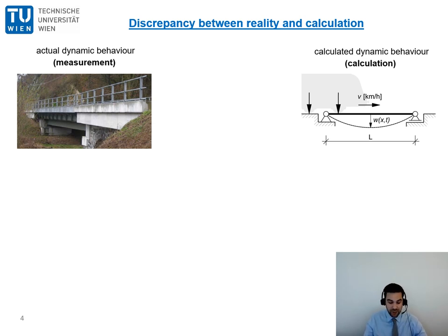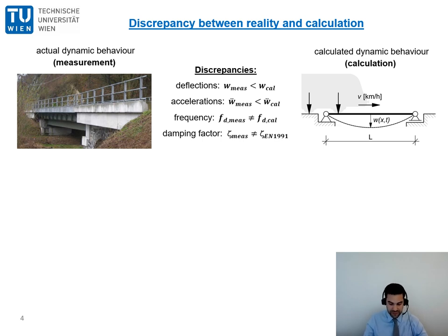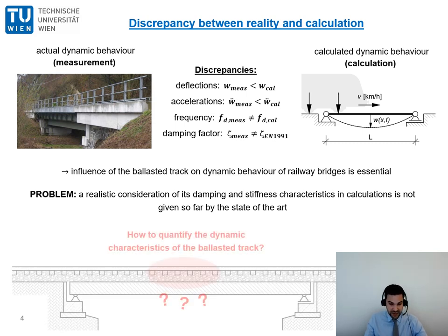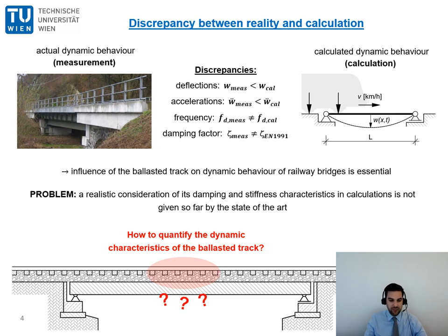Now on this slide I come to the main motivation of our research work and that's the discrepancy between reality here on the left and calculation here on the right. If the actual dynamic behavior of a bridge is measured and then compared to the calculated behavior there are often significant discrepancies. The calculation often overestimates the actual vibration responses and therefore lead to uneconomical results. This overestimation applies to the deflections, the accelerations, and also to the dynamic parameters which are frequency and the damping factor. One main reason for this discrepancies lies in the ballasted track. More specifically in the consideration of its damping and stiffness properties in dynamic calculation. Because the problem concerning this matter is that there is no available accurate mechanical model with related dynamic characteristic values of the ballasted track. So the interesting research question now is how can we quantify the dynamic characteristics of the ballasted track?